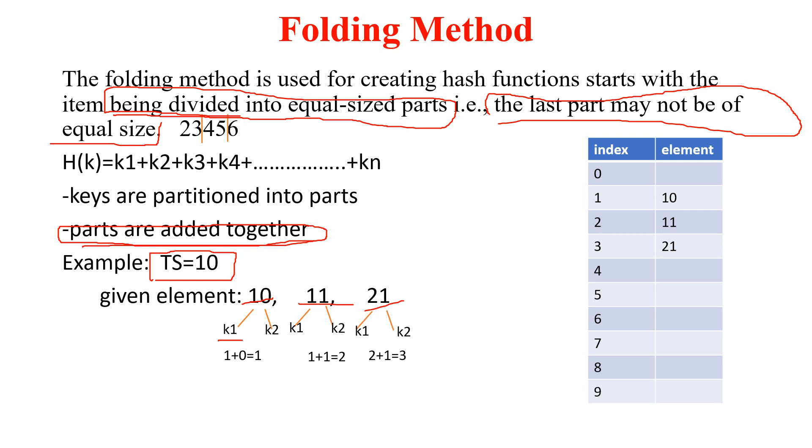So 1 plus 0, you will get 1. It means that 10 is going to store at first index.